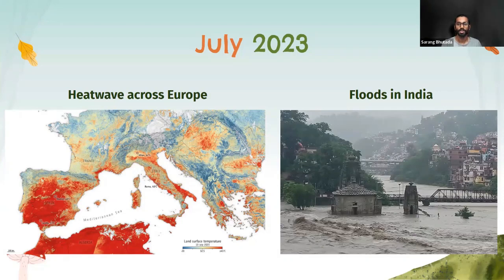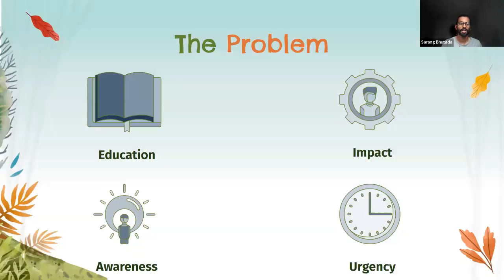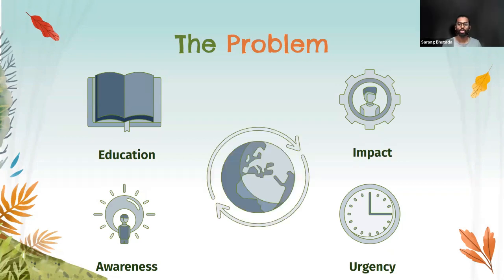This is July 23, one of the hottest summers in the history of Europe. On the other hand, there are floods in India. The climate crisis is worsening, the primary reason being lack of education, awareness, impact, and urgency about the effects of climate change.